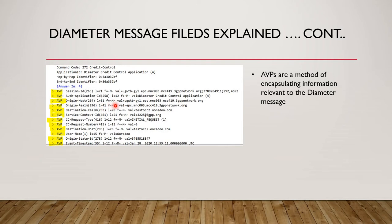Auth application ID is an AVP whereas application ID is the header. Origin host is the client which is sending this information — in a request message it is the client, in a response message it is the server replying. Origin realm is the address of that host; a realm is always uniquely identified in a network. You can see the realm name is something like 'dot mcc dot hbp network'. All messages coming from this realm will have a unique address.